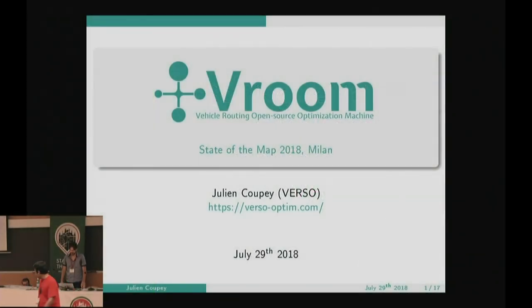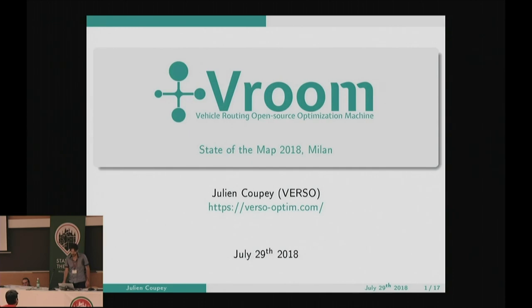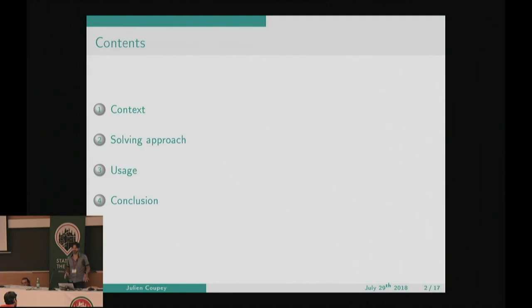My name is Julien Coupez. I work at Verso, a company that does optimization software. Among other topics, we work on solving vehicle routing problems with Vroom. I'll give a bit of context on what kind of problems we're trying to solve, then explain the outline of the solving approach, and get to how you could use the project if you're interested. This is a talk about OpenStreetMap data usage for transportation beyond routing.